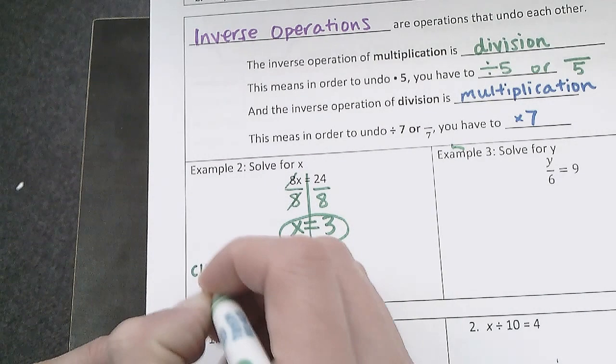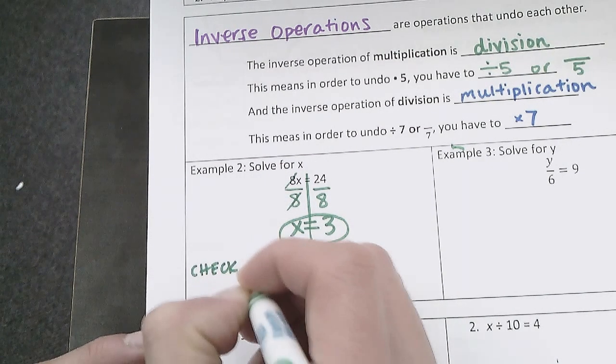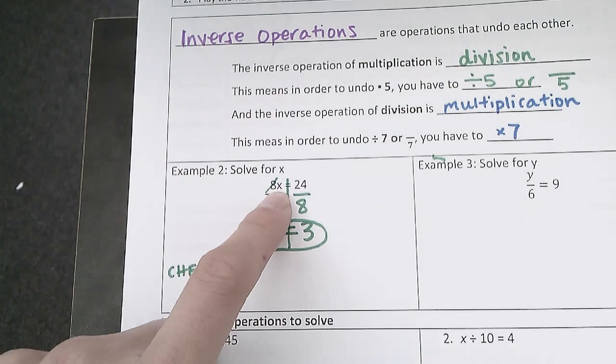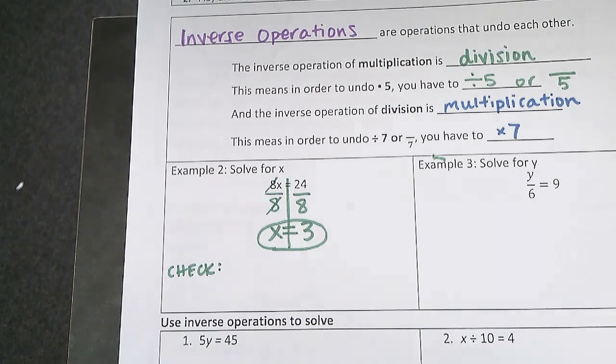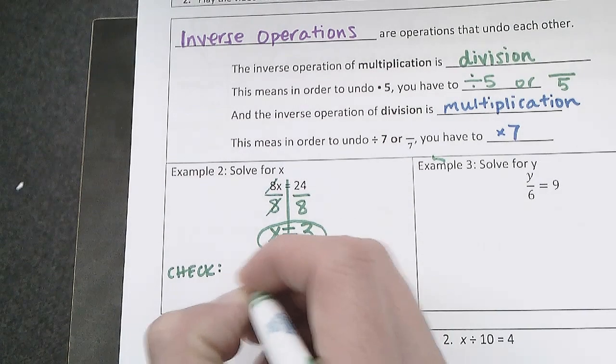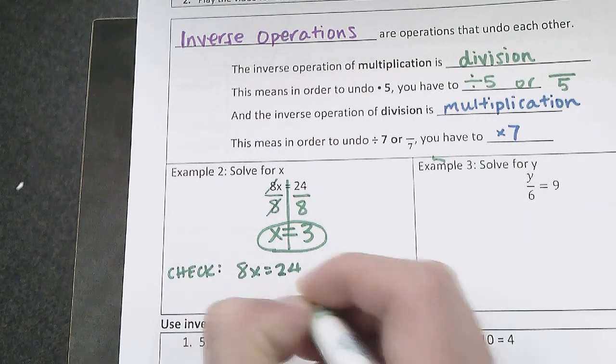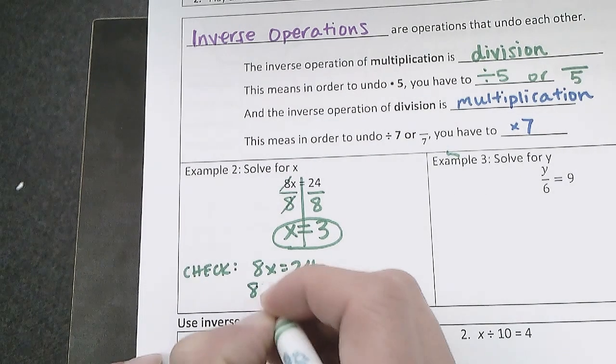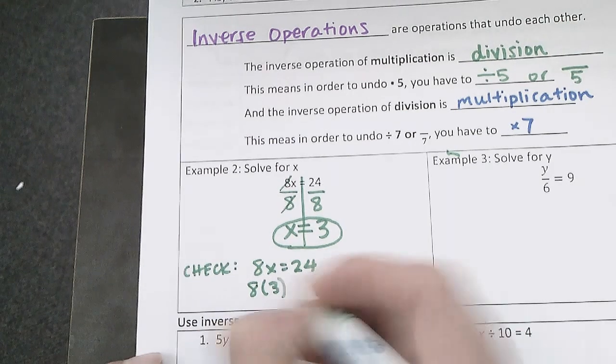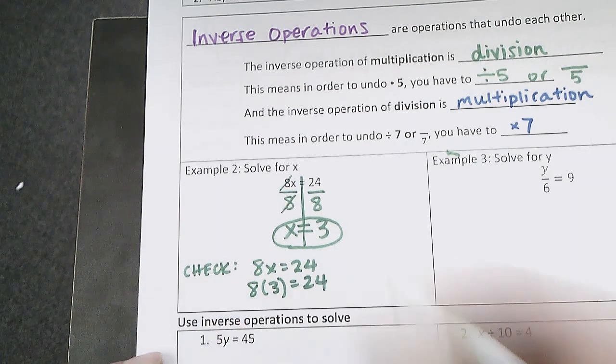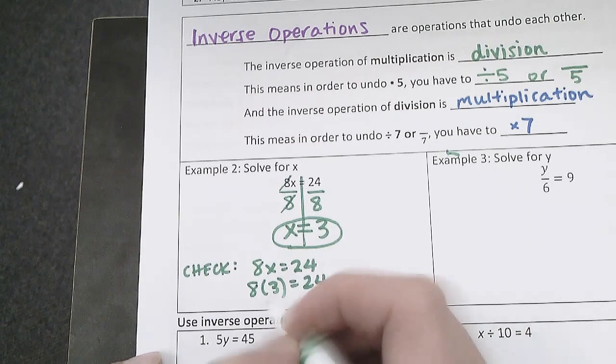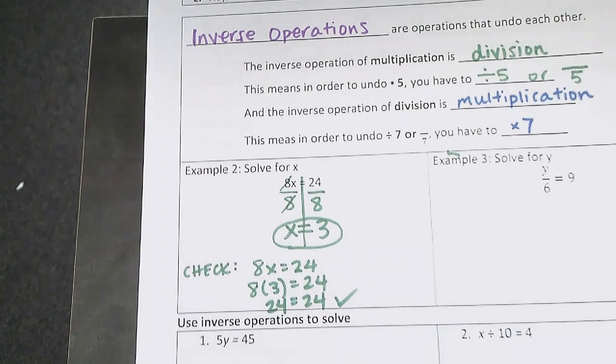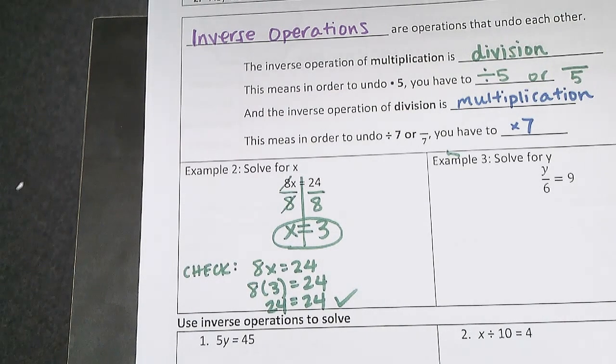And the way that I can double check that my answer is correct is, let's go back to my original equation of 8x equals 24, but I'm going to substitute in my answer here. If x equals 3, so then it would be 8 times 3 instead of x equals 24. Double check that this is correct: 8 times 3 is 24, 24 equals 24. Yup, all good there.